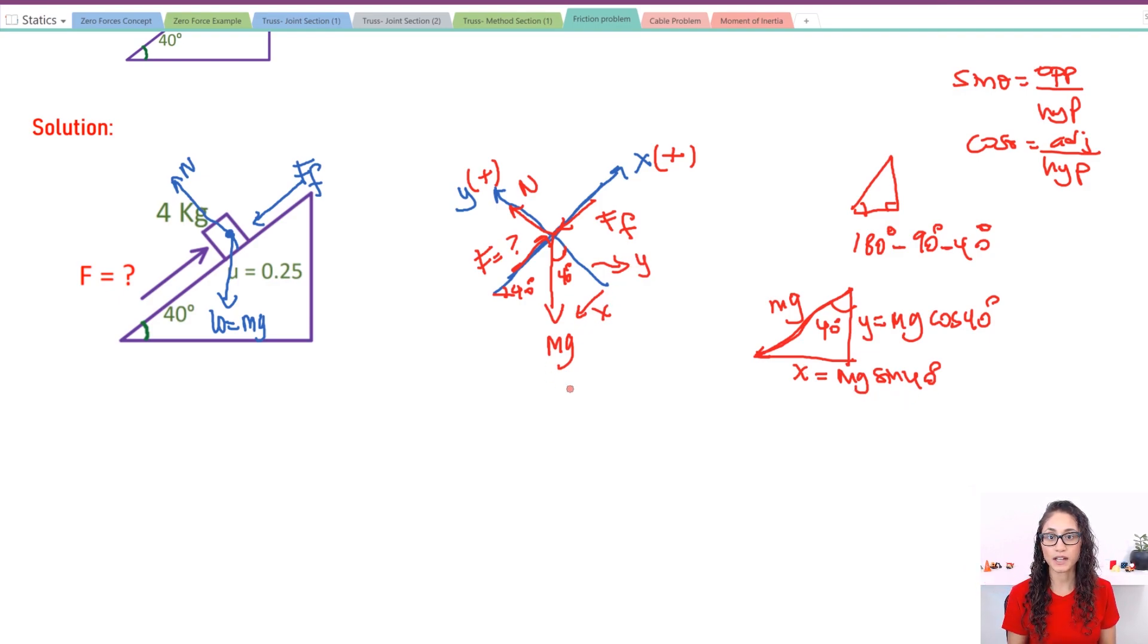So our free body diagram is ready. Now all we need to do is just start using equilibrium equations. So we have the summation of the forces on the Y is equal to zero. So I have N but I have minus mg because mg is going negative. It's going down this way. So I have minus mg and it's going to be cosine 40 because that's the Y. And this is equal to zero. So now I have N is equal to mg cosine 40.